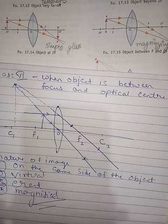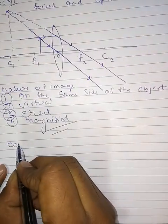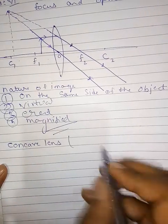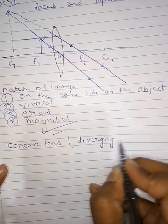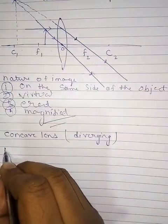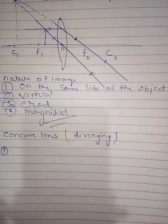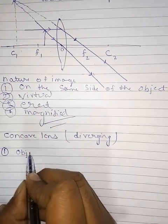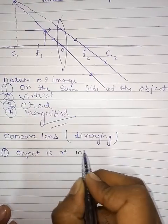Now we'll discuss the case study related to image formation of concave lens. Concave lens की property diverging है। जितना भी light ray आता है, principal axis के parallel आए light ray को यह diverge कर देता है, but it seems that it is coming from focus।